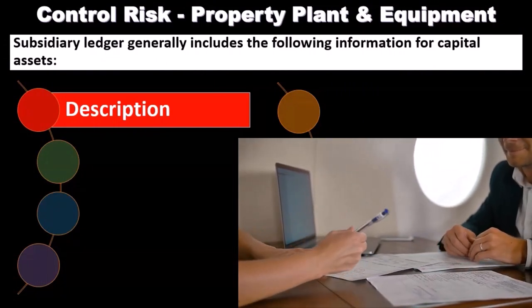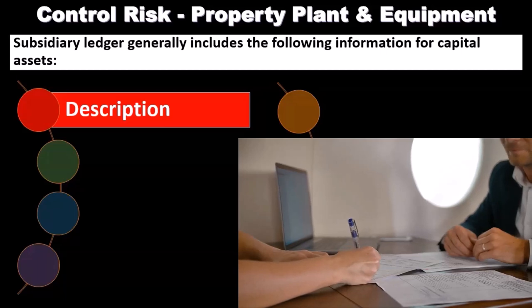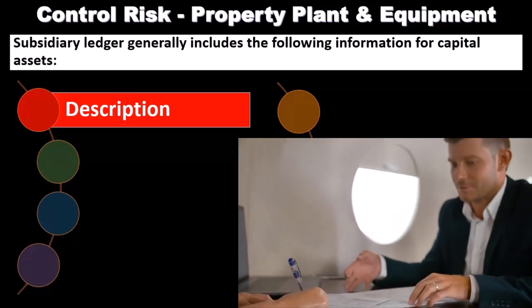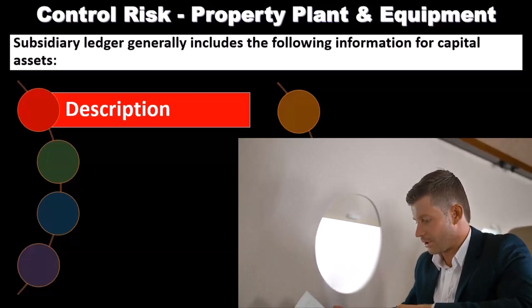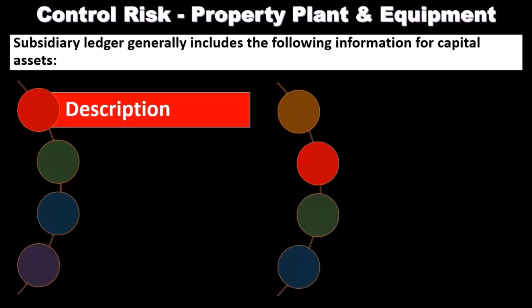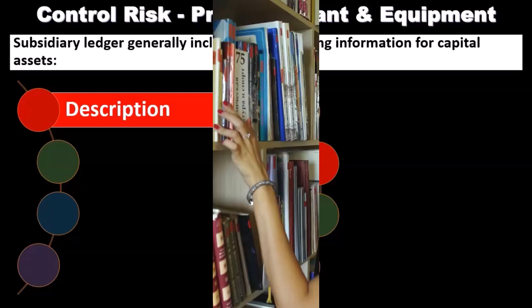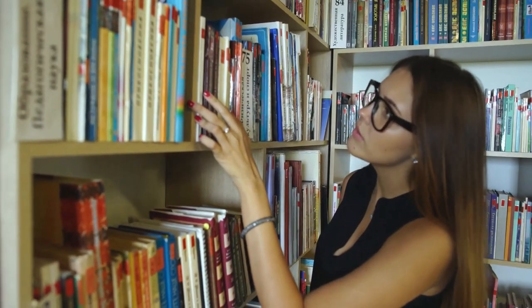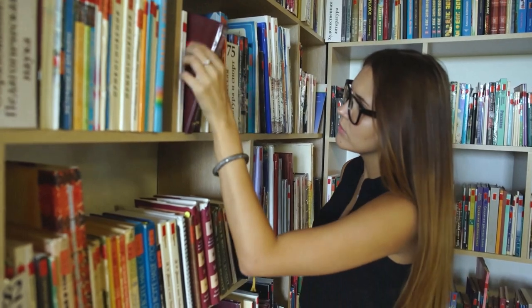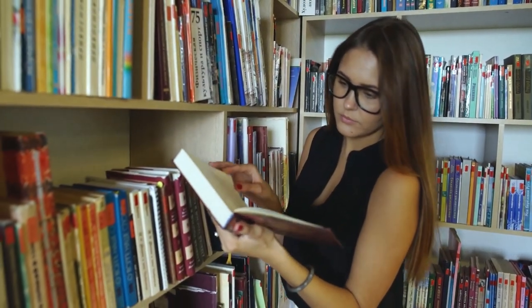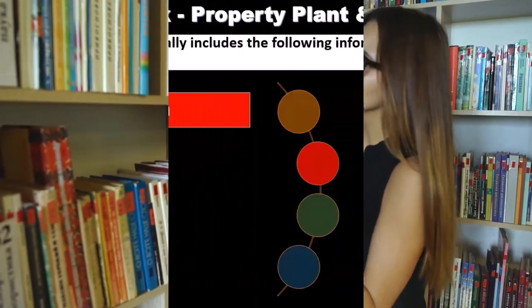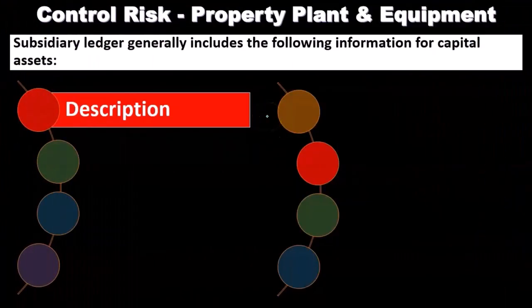This can be a detailed and complex report. The subsidiary ledger for depreciation and equipment typically tracks book value, and there will also be separate calculations for tax purposes, since accumulated depreciation for taxes is typically different from book depreciation. It can be a complex schedule overall.